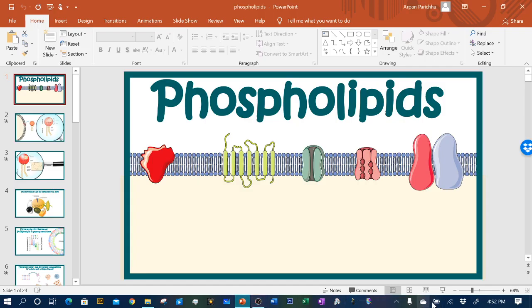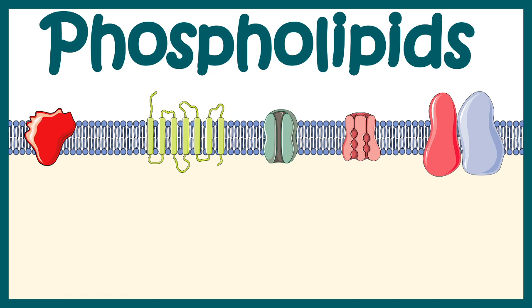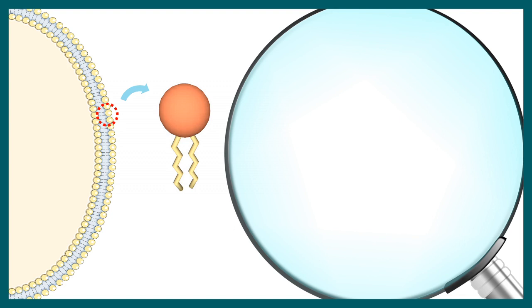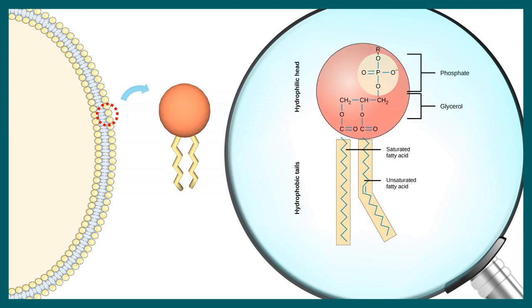In this video we'll talk about phospholipids, especially membrane phospholipids. The plasma membrane of all biological cells is composed majorly of phospholipids, which have a hydrophilic head and a hydrophobic tail. The hydrophilic head is made up of glycerol and a phosphate residue with a charged group, which is why it is polar, whereas the tail is made up of saturated or unsaturated fatty acids.